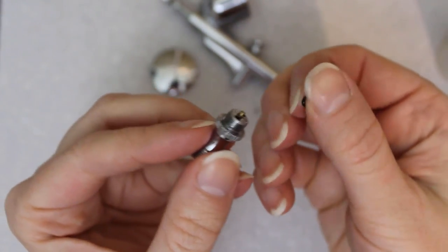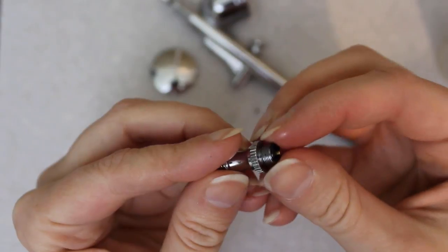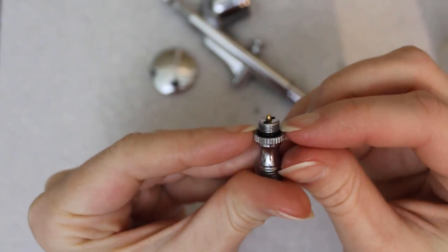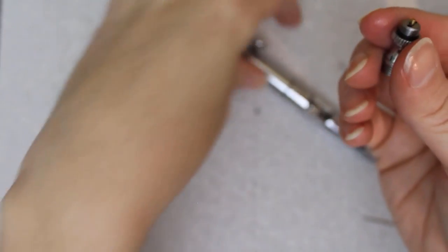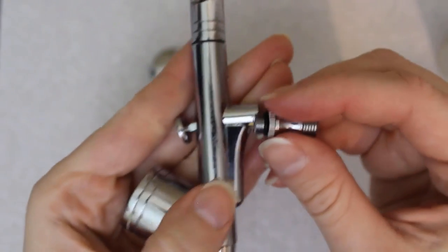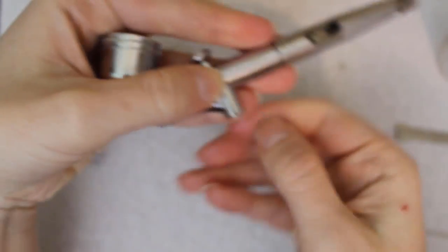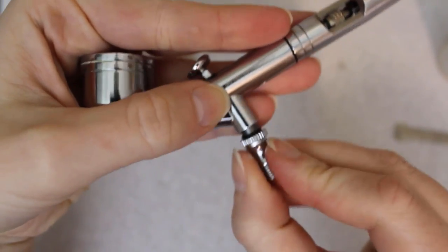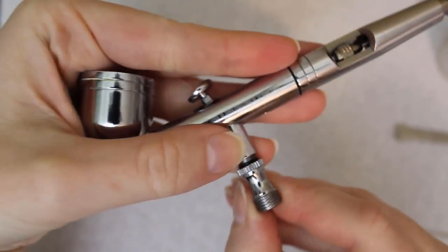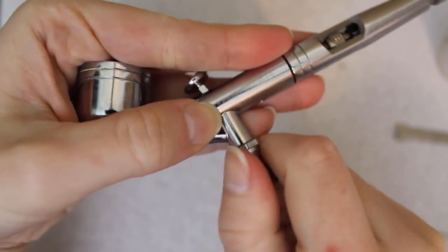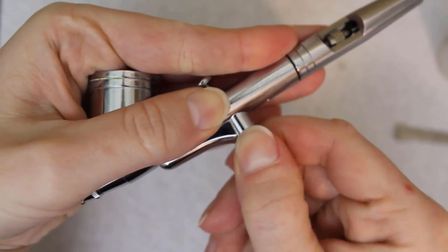I'll rub the extra oil onto the o-ring and then put it back on the threads. Then this screws into the bottom of the airbrush. Whoops, doesn't want to. There we go. And now it's all back together.